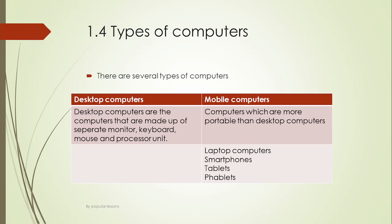Mobile computers, as the name suggests, are very portable — more portable than desktop computers. Examples include laptop computers, smartphones, tablets, and phablets. A phablet is a smartphone and tablet combined together. These days you can find many foldable devices, such as the Samsung Fold and Google folding smartphone — those are called phablets.